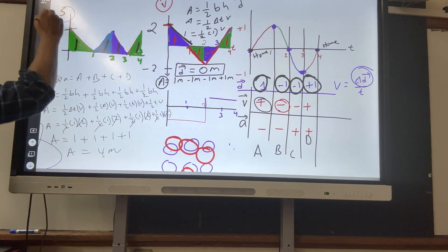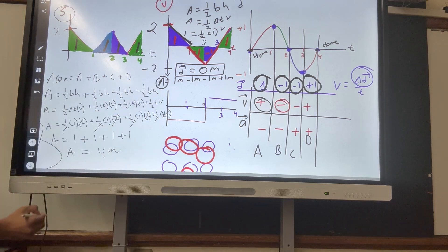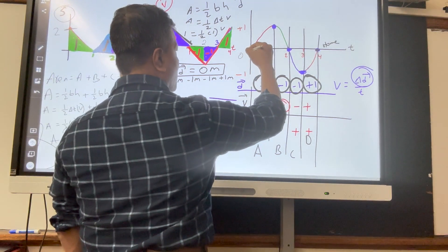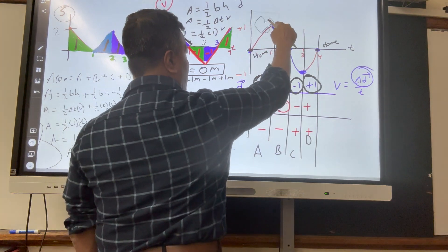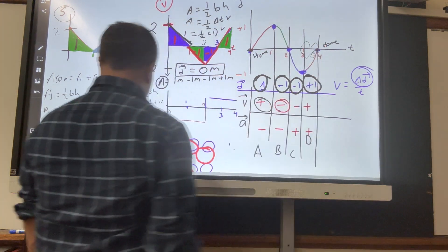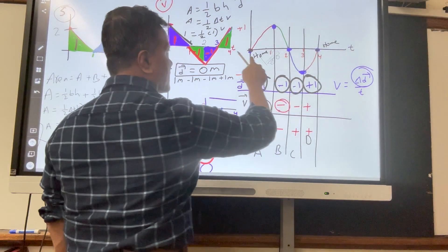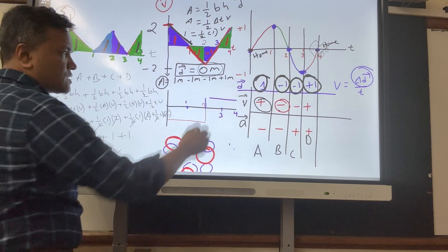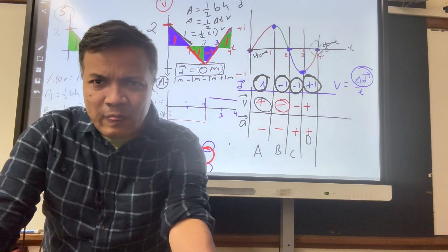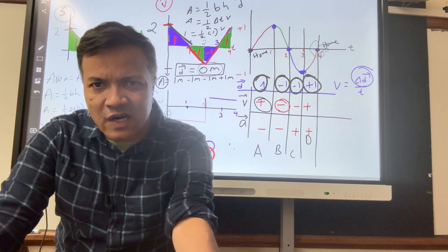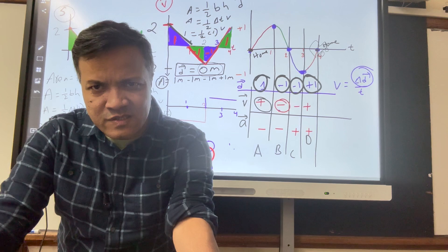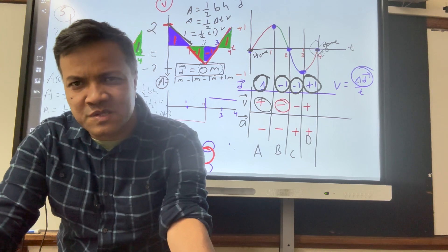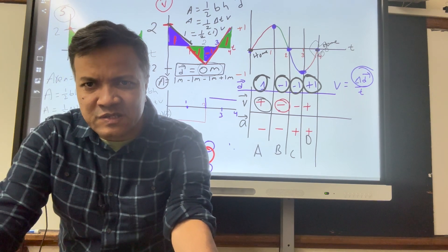The total distance the object moved in four seconds is four meters. The total displacement in four seconds is zero meters. I hope you now have a full understanding of distance versus time graph, speed versus time graph, absolute value of acceleration versus time graph, displacement versus time graph, velocity versus time graph, and acceleration versus time graph.